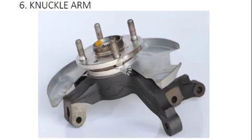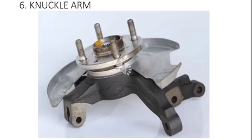Komponen yang keenam adalah knuckle arm. Fungsi knuckle arm pada sistem suspensi adalah sebagai tempat dudukan dari roda, kemudian bearing roda, hingga perangkat rem cakram atau tromol.